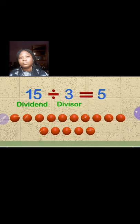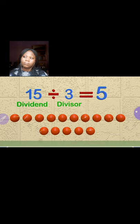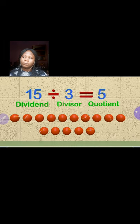In this problem, let's say we have three kids that want to share the 15 balls. The three in the problem is the divisor. The number five is the answer, and we call this the quotient. This is the number that we get after dividing the dividend by the divisor.